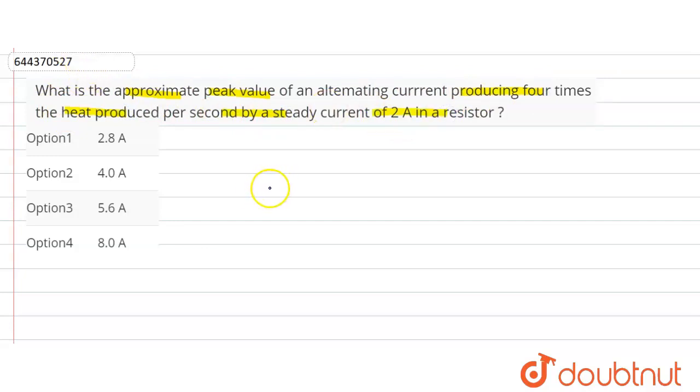Now see the relation between the RMS current and the peak current. We know I₀ equals I_rms times root 2.